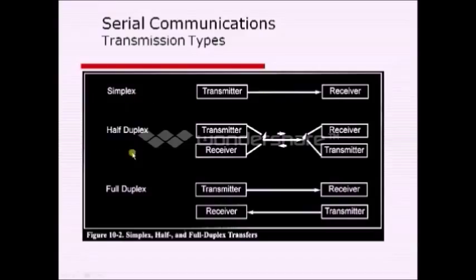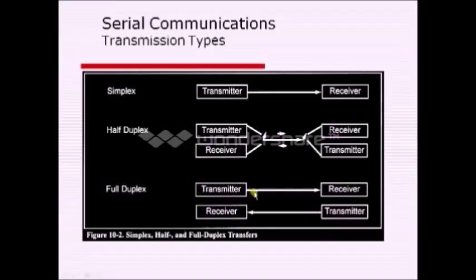In half duplex, at a time one machine can transmit data and the other machine can receive the data. We have a bidirectional channel, but simultaneous transmission is not possible because we have only one channel. In full duplex communication, we have two independent channels — one for transmission and the other for receiving — so it is bidirectional and simultaneous communication is also possible.